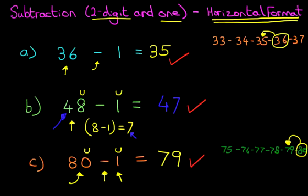So, 80 minus 1 equals 79. Now, when the number ends in 0, in example C, we have 80, or if it ends in 70, 60, 50, anything that ends in 0, just be very, very careful when you are subtracting 1. This is a very common mistake that children make. So, just be very careful with those.